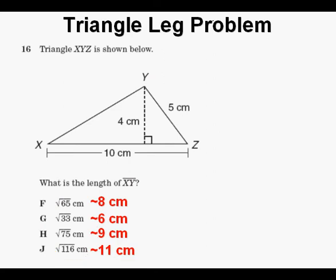Since 8 squared is 64, answer F is a little over 8 cm. The square root of 33 is a little less than 6, the square root of 75 is a little less than 9, and the square root of 116 is a little under 11.